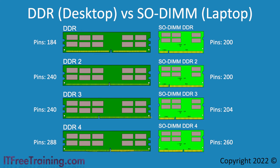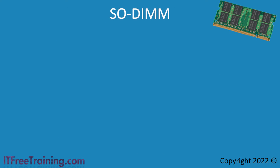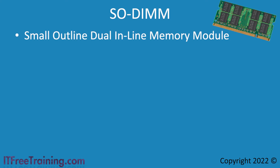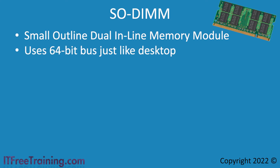Although the memory modules are about half the size of desktop memory, in many cases they have about the same number of pins. So the first question is, how does performance differ between the two? Laptop memory is called SODIMM, which stands for Small Outline Dual Inline Memory Module. Like DDR memory, it may contain memory chips on one or both sides. Since it is essentially a smaller version of desktop memory, it uses a 64-bit bus just like desktop memory, which makes it easier as memory controllers do not need to be redesigned to use a different bus size.